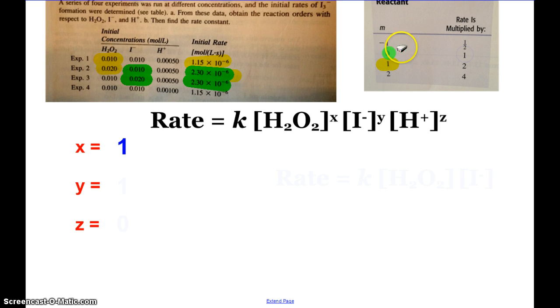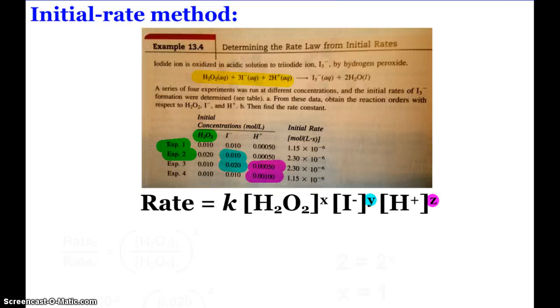For our concentration of iodide, I have to compare experiment one to experiment three in order to find my concentration of iodide. Why? Because I need the hydrogen peroxide and the hydrogen ion to stay constant. I must compare experiment one and experiment three. Again, I have to compare experiment one to experiment three in order to find Y. And then to find Z, I would have to compare experiment one to experiment four.